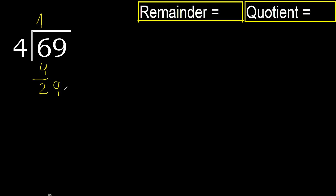29. 4 multiplied by 8 is 32 — is greater. 4 multiplied by 7 is 28 — is not greater, ok. 29 minus 28 is 1. Next.